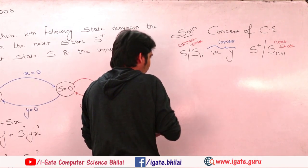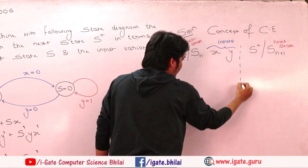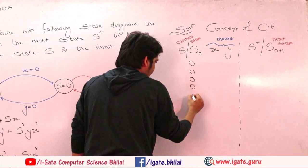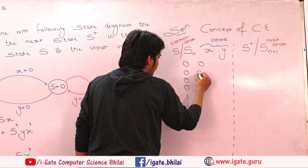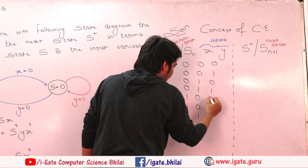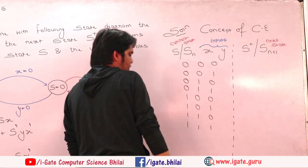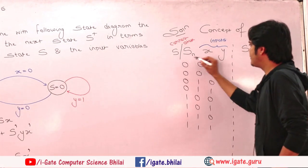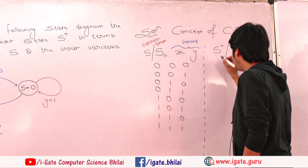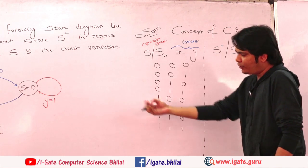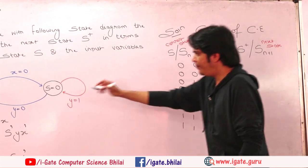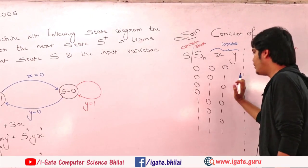The way of solving it is very simple. We have to make a table properly with all possible values of S, X, and Y. After filling in those values and simplifying, we will match one of the given options. We have to focus on the transition diagram and the characteristic equation.